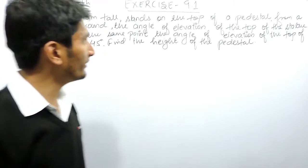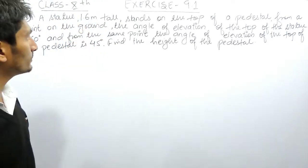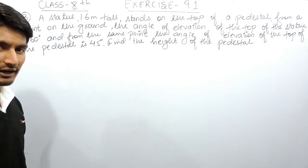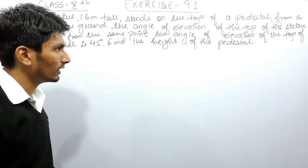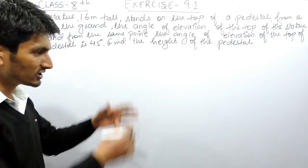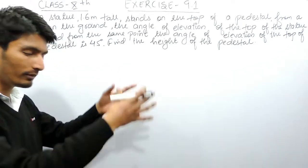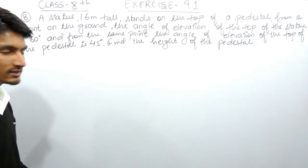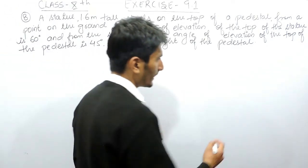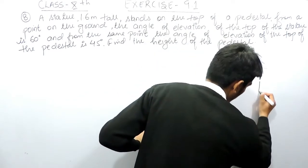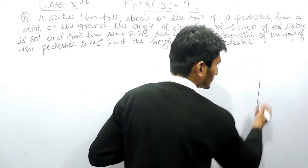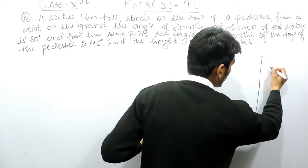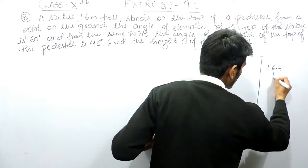A pedestal is given on which a statue 1.6 meter tall is placed. A pedestal is basically a platform — you generally see in parks where a platform is created on which the statue of any big personality is placed. In this question, a pedestal which is a platform is there, and on it a statue which is 1.6 meters is placed.